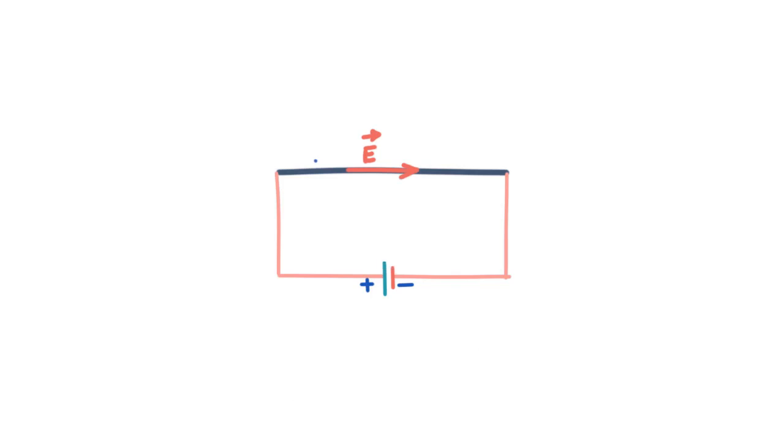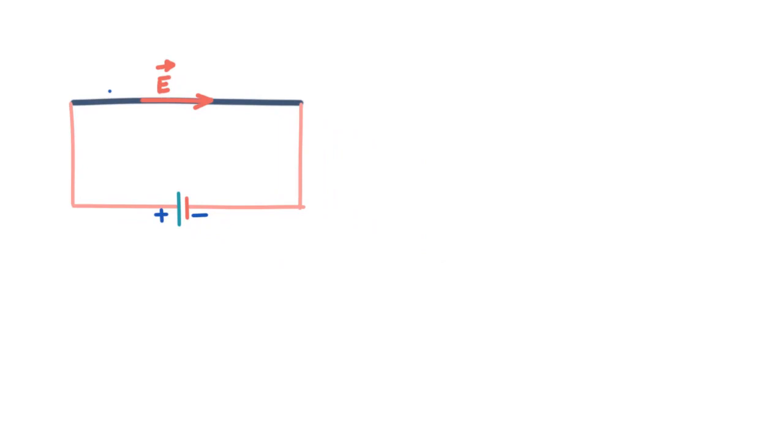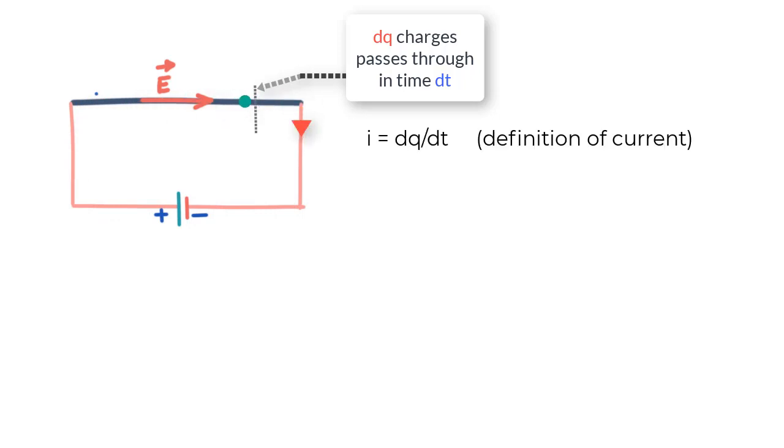Staying with the circuit, let us say the amount of charge that passes through a section of a wire, say this one, is dQ and time it takes for dQ to pass through it is dt. Then we say that the current through the wire is I equal to dQ upon dt. And in steady state, this would be the same for any cross section of the wire or simply put the entire length of the wire.